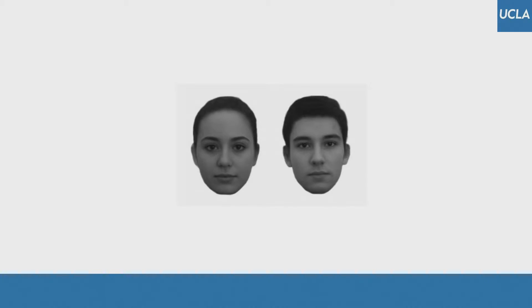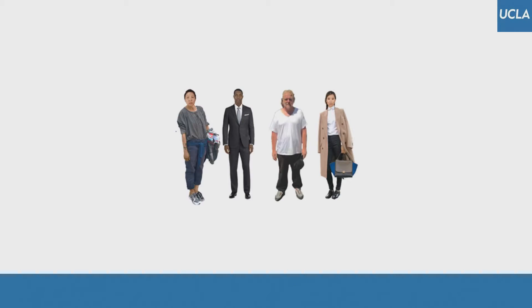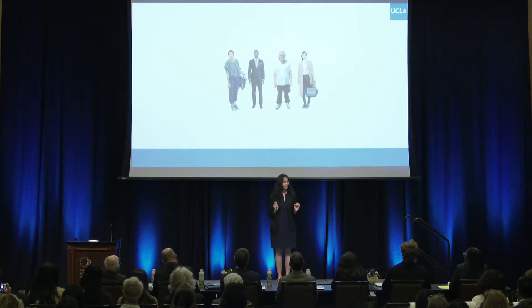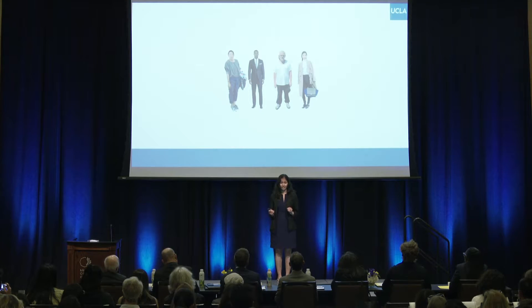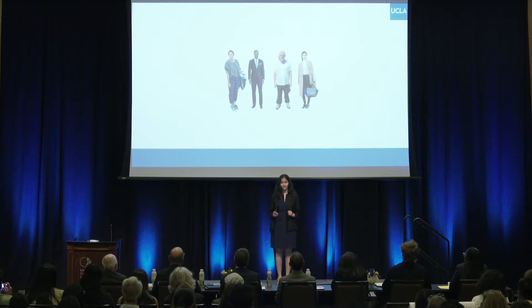However, a lot of the research that looks at first impressions uses images that look a bit like this. This is because if we use naturalistic images, it becomes extremely hard to pinpoint whether stereotypes related to race or gender, or visual cues related to clothing or posture, are responsible for forming first impressions.